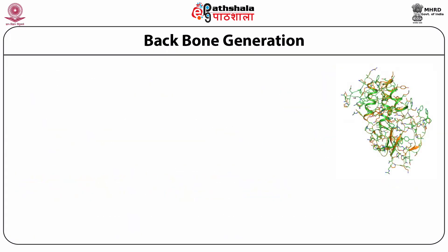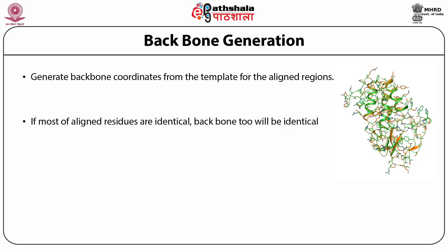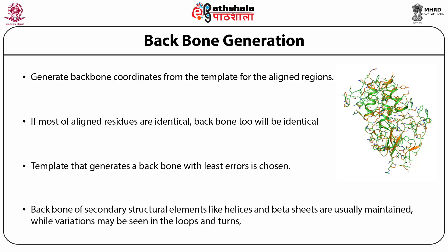Backbone generation: generating backbone coordinates from a template for the aligned regions means we borrow the backbone of that particular template for our target protein. If most of the aligned residues are identical, the backbone will be identical. The template that generates a backbone with the least error is the chosen protein as a template. The backbone of secondary structural elements like helices and beta sheets are usually maintained, while variations may be seen in loops and turns.